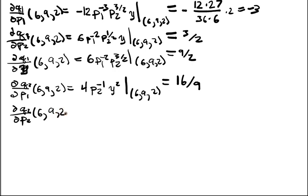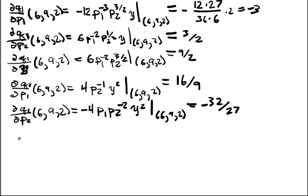DQ2/DP2 of 6, 9, 2 is equal to -4P1 P2^(-2) Y^2. Evaluate at 6, 9, 2. Eventually, you evaluate that, you should get 32/27.